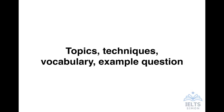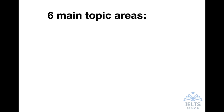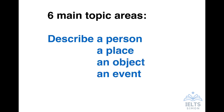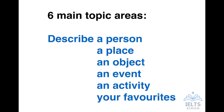What I'll do now, as I've told you the techniques, is move on to looking at the preparation — mainly topics, vocabulary, and ideas. In this part of the lesson we're going to look at topics, techniques, vocabulary, and an example question for IELTS Speaking Part Two. There are six main topic areas you should prepare for. All IELTS Speaking Part Two questions begin with the word 'describe' — it's a describing task. The six main areas are: describe a person, a place, an object, an event, an activity, and your favourites.